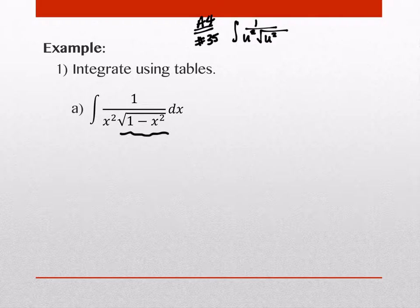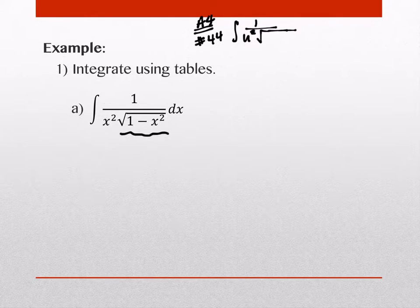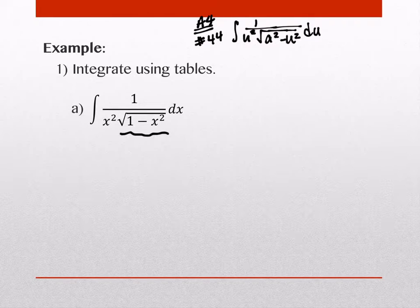Hang on. It's the next one. It's number 44. Number 44. U squared and then this one is a squared minus u squared du. This is what 44 says.